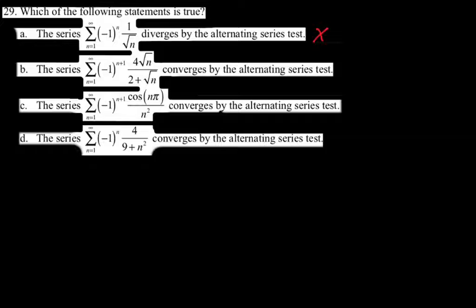For choice B, the series (−1)^(N+1) times 4 root N over (2 plus root N) — if we take the limit as N approaches infinity, we get 4, which is not 0. So this does not converge at all, never mind by the alternating series test. Choice D definitely converges by the alternating series test and is therefore the answer.